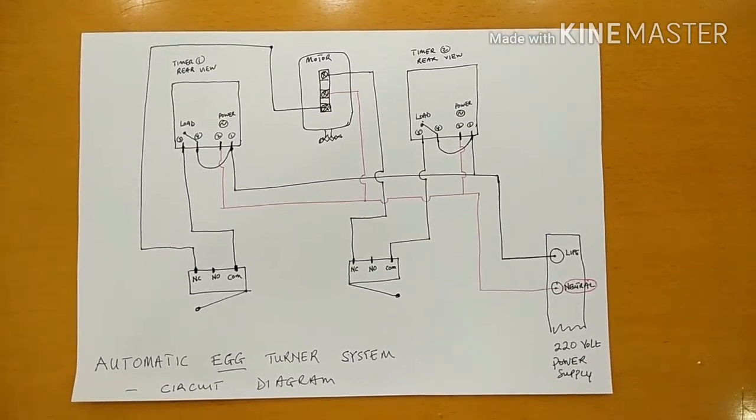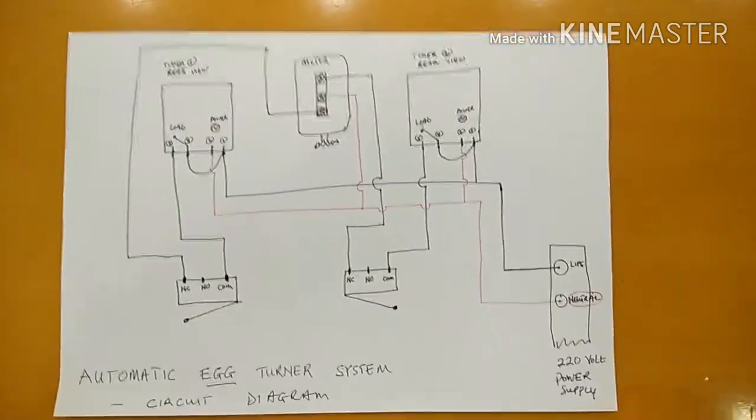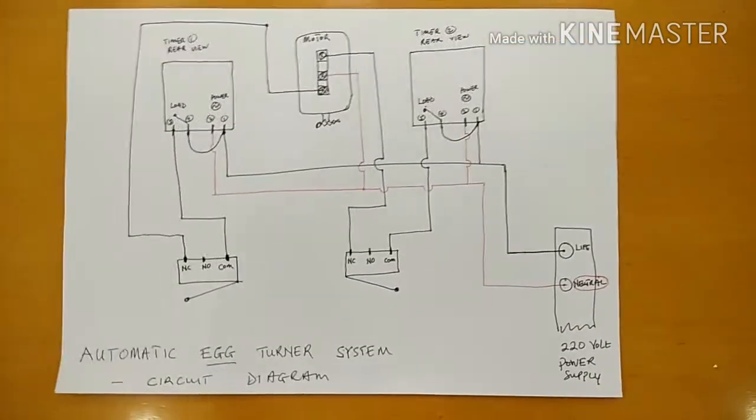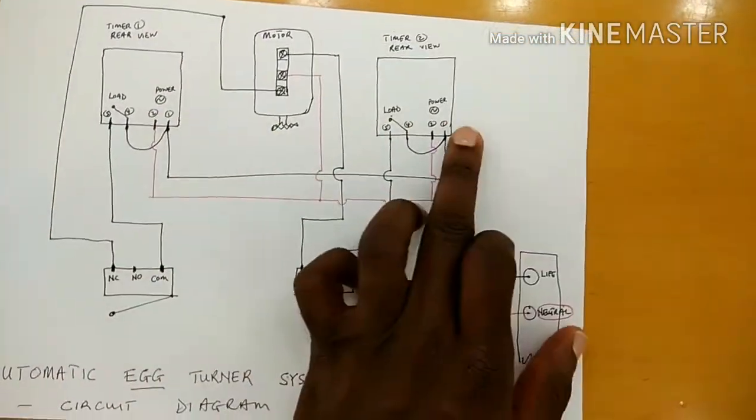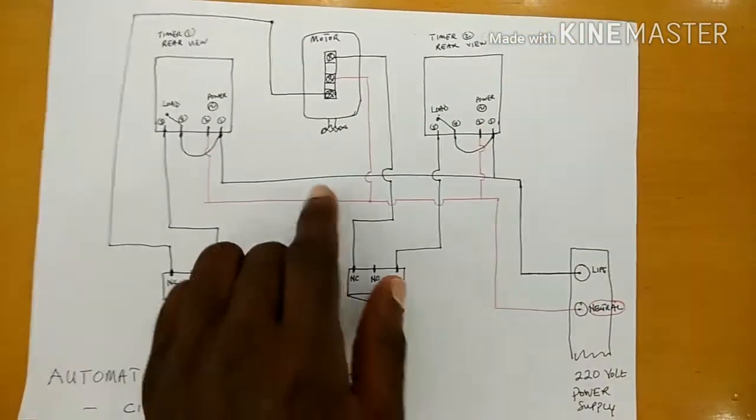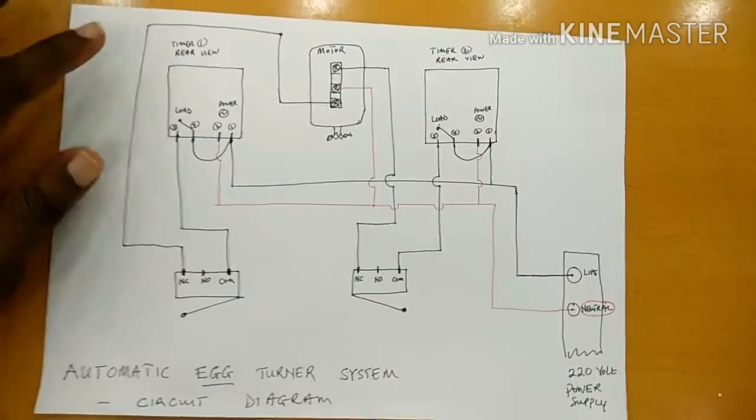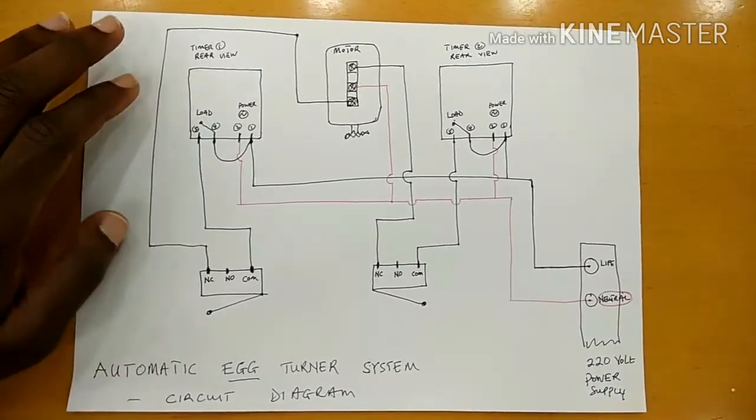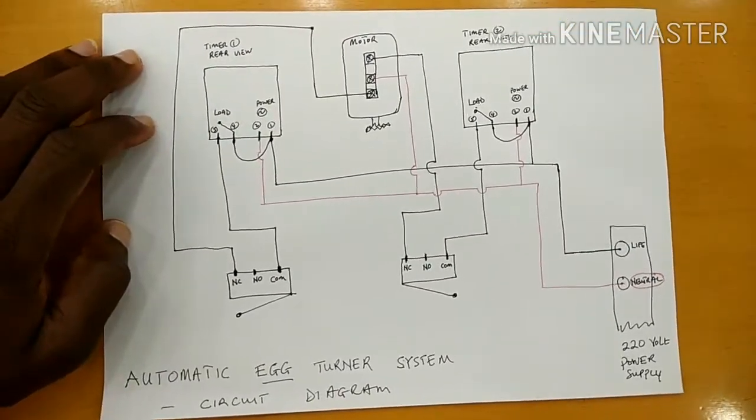Hello friends, welcome to my kit videos. Earlier on I did a video on using two timer switches for automatic control of the egg turner motor. Here is the circuit diagram for that particular video.